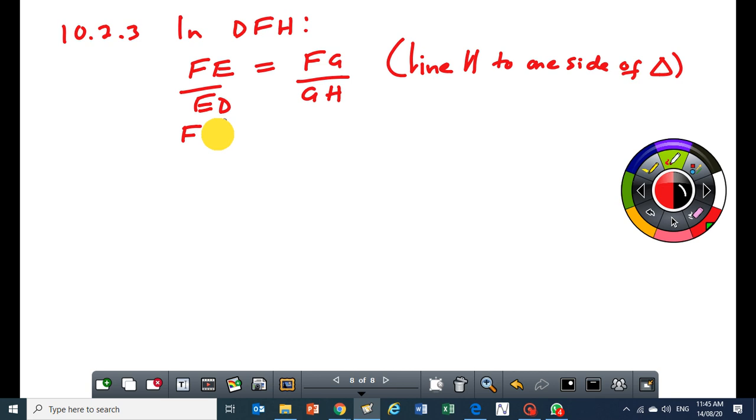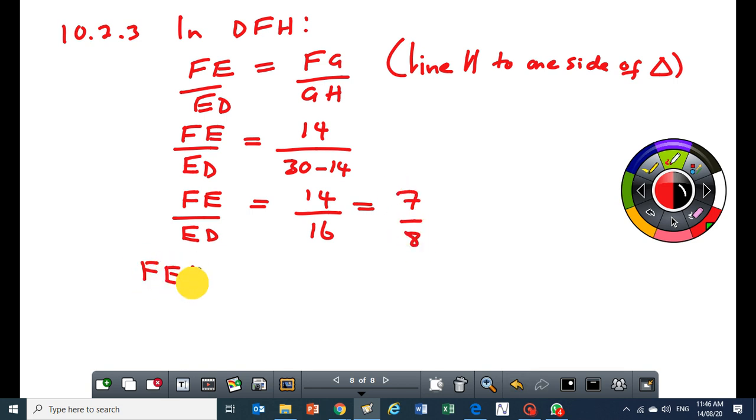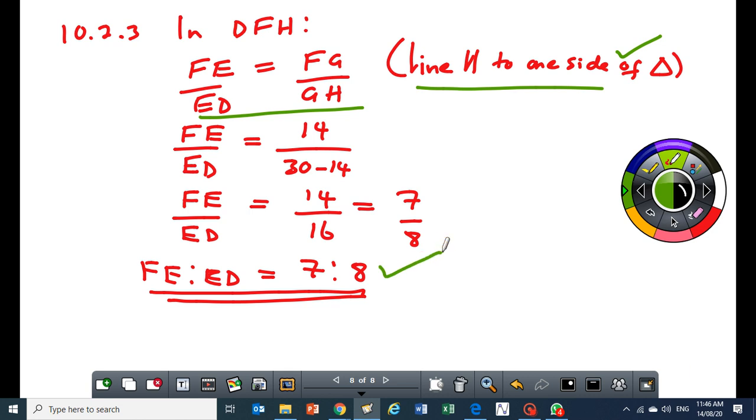So my FE over ED will be equal to FG is equal to 14. So that will give me FE over ED is equal to 14 over 16, and this I can write as 7 over 8. So my ratio of FE is to ED will be equal to 7 is to 8. The mark allocation will be allocated as this statement plus the reason, one mark, and the answer, one mark.